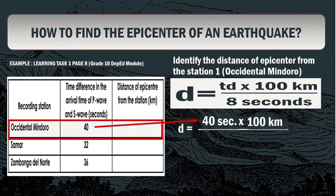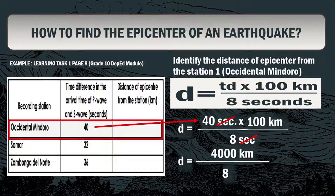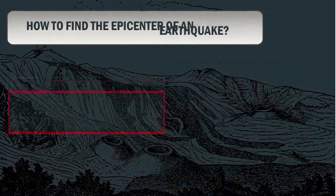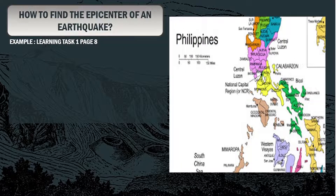Substituting the given data into the formula, we have D = 40 seconds × 100 kilometers ÷ 8 seconds. The unit 'seconds' cancels out in numerator and denominator, leaving kilometers. Multiplying 40 by 100 gives 4,000 kilometers, then dividing by 8 gives a final answer of 500 kilometers.